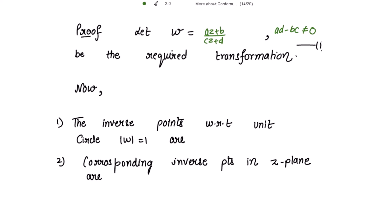Now, the inverse points with respect to unit circle mod w equal to 1 are 0 and infinity. And the corresponding inverse points in the z-plane are: for w equal to 0, the corresponding point is z = -b/a, and for w equal to infinity, z = -d/c. So these are the two inverse points in the z-plane.